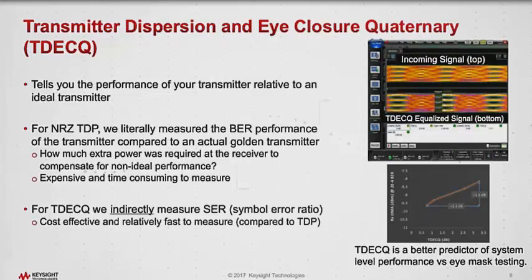Standards committee members decided they wanted a different approach and developed the TDEC-Q measurement, where we indirectly measure the symbol error ratio using an oscilloscope. That means it's a lot more cost-effective, and it's fairly easy and fast to make that measurement compared to the TDP measurement.